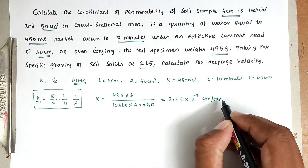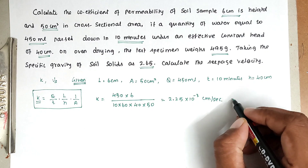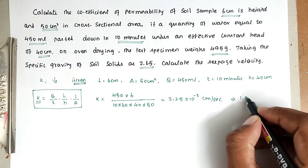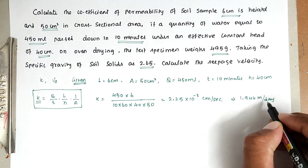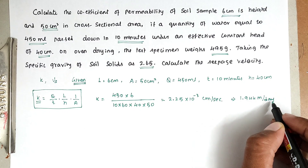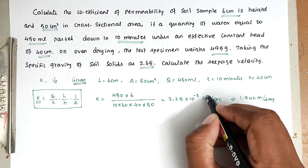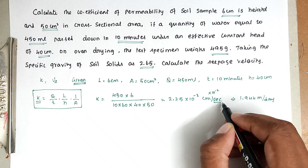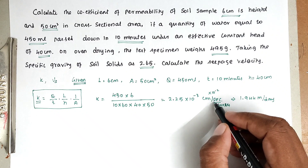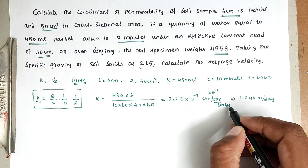We can also convert K into meters per day. Multiplying by 10⁻² to convert centimeters to meters, and then multiplying by 60 seconds × 60 minutes × 24 hours to convert seconds to days, we get K = 1.944 meters per day.